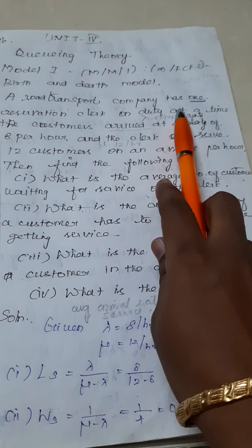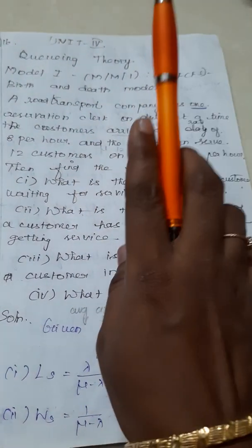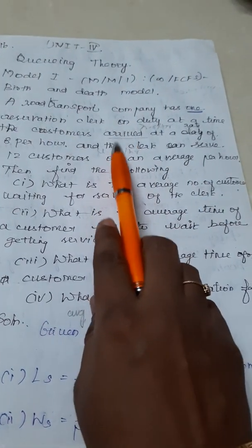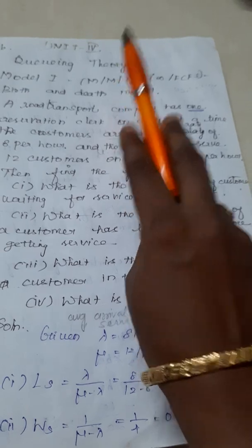The data says one reservation clerk, which means the entire data talks about a single service system. So we are there in the model M/M/1, a single service system.